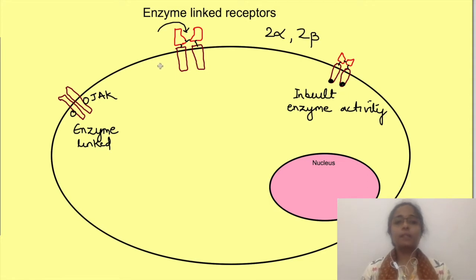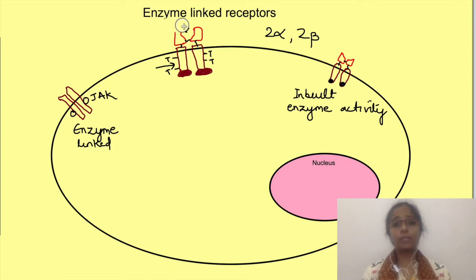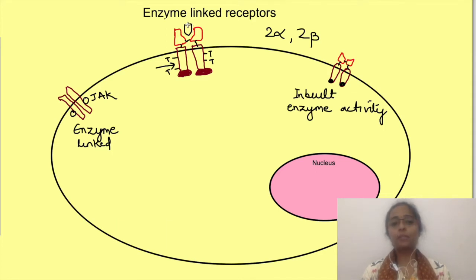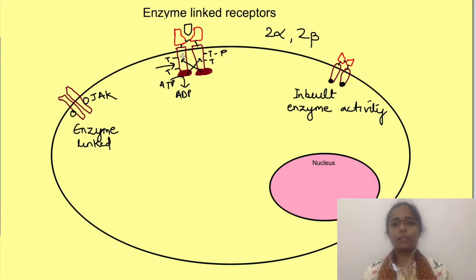This intracellular part is the one which has intrinsic tyrosine kinase activity, i.e. an ability to phosphorylate tyrosine residues. The beta subunits also have some tyrosine residues. When insulin is not bound to the receptors, the tyrosine kinase is inactive. When insulin binds to the receptors, the tyrosine kinase activity of the beta subunits activates, which then transfers a phosphate group from ATP to tyrosine residues on the other beta subunit — the beta subunits cross-phosphorylate each other. This is also known as autophosphorylation.